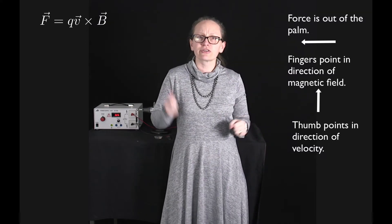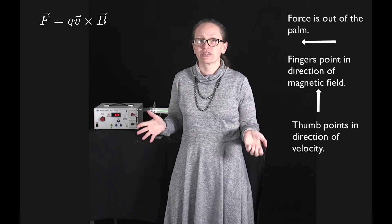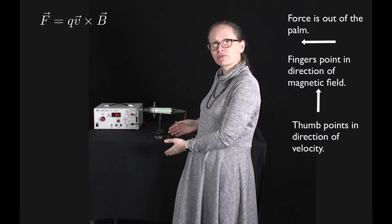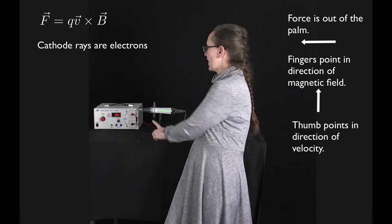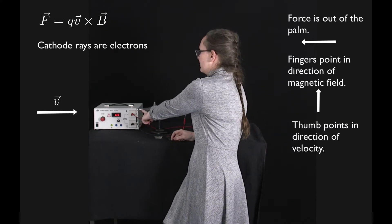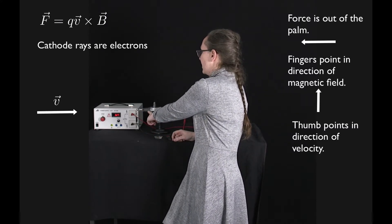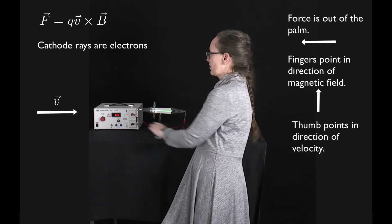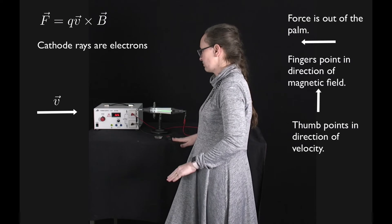So let's use the right-hand rule to make a prediction now. What I've got here is a cathode ray tube. So the cathode rays, remember, are just electrons and they are coming from the cathode here between these parallel plates and along this way. So they're going from the left side to the right side.